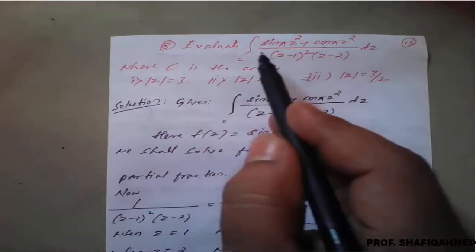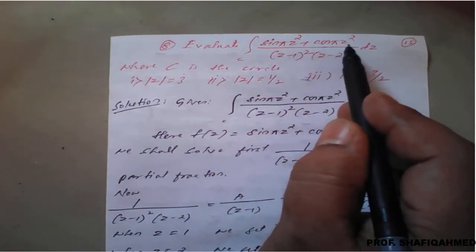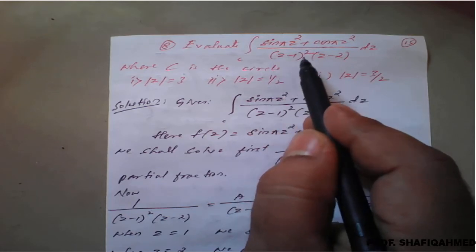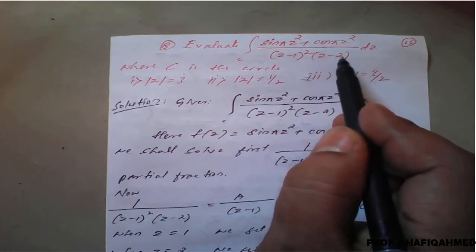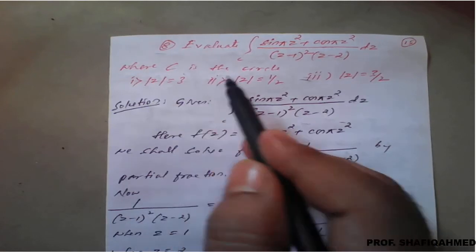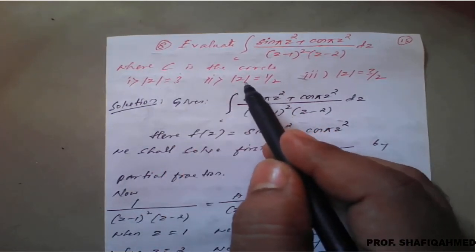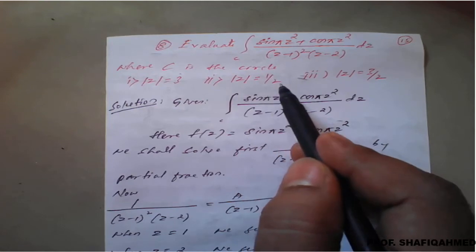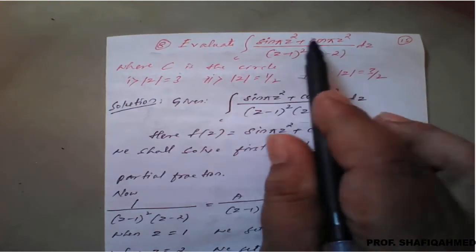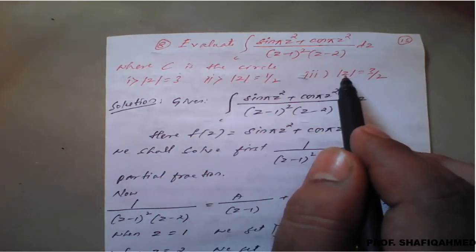Next example: evaluate the integration of (sin πz² + cos πz²) / [(z−1)² (z−2)] dz. Three options are given: first, a circle of radius 3; second, a circle of radius 1/2; third, a circle of radius 3/2. We have to check this integral for all three and conclude the result.